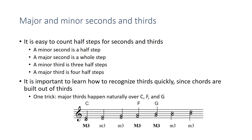It's especially important to identify thirds quickly since triads and chords are built out of thirds. Here's a trick: major thirds happen naturally over C, F, and G. The other thirds — over D, E, A, and B — are naturally minor thirds. Using that as a basis, if the interval has been modified — for example, C to E is normally major, but C to E-flat is minor — or D to F is naturally minor, but D to F-sharp has been made a half step larger, so it's a major third. Using white note thirds as a reference point is a good way of identifying thirds.